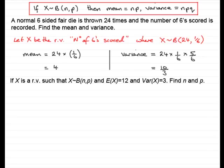Now here's another one. And what we've got here is that if X is a random variable such that X follows a binomial distribution with two parameters n and p, and E(X) is 12 and the variance of X is 3, find n and p. Well, we know that E(X) is the mean, the expected value of X, and that's equal to 12. So what we know is that n times p equals 12. Let's call that equation 1.